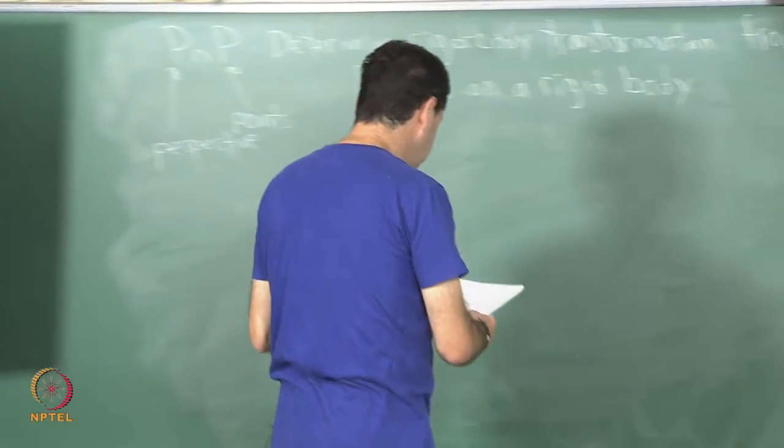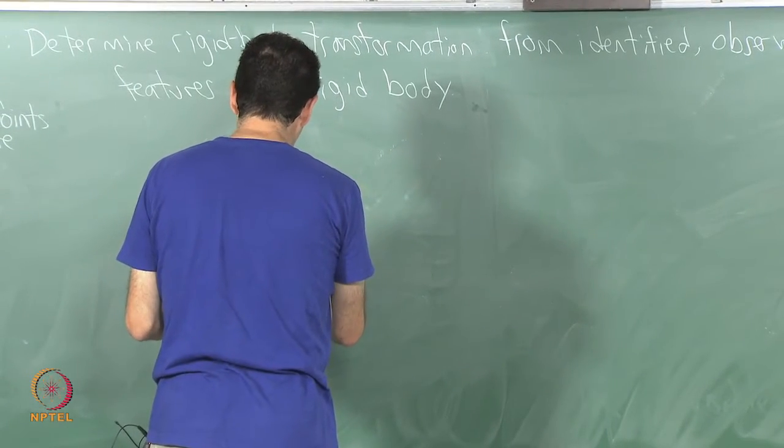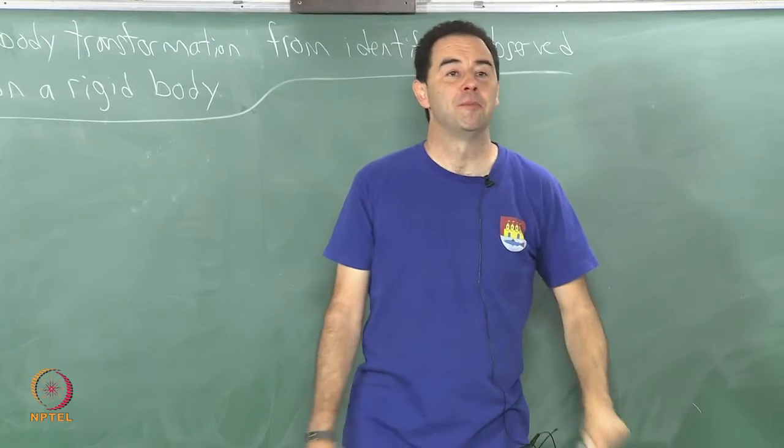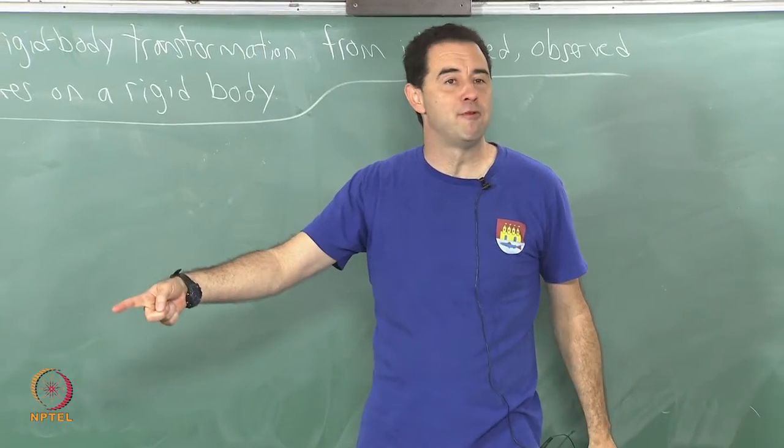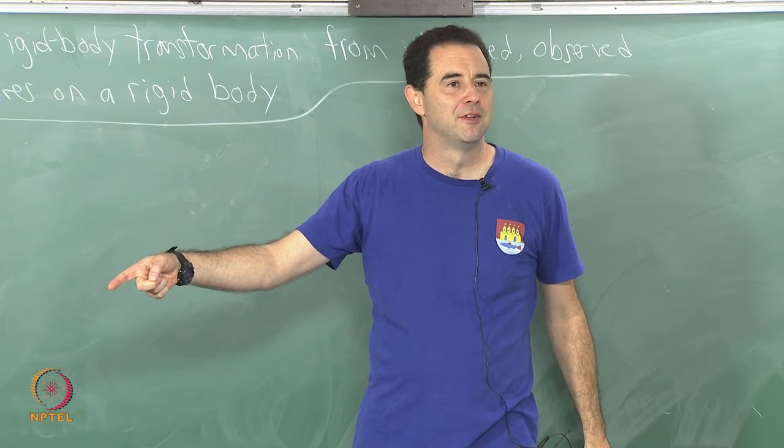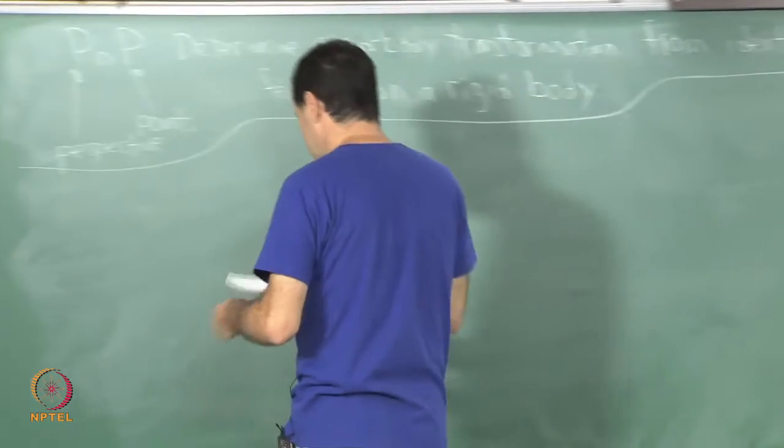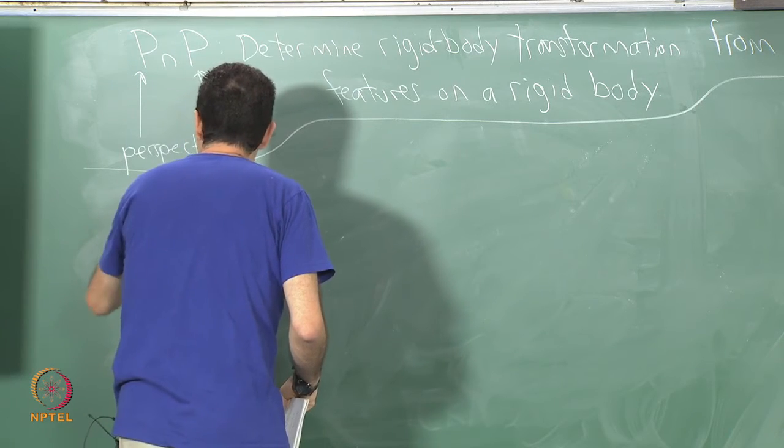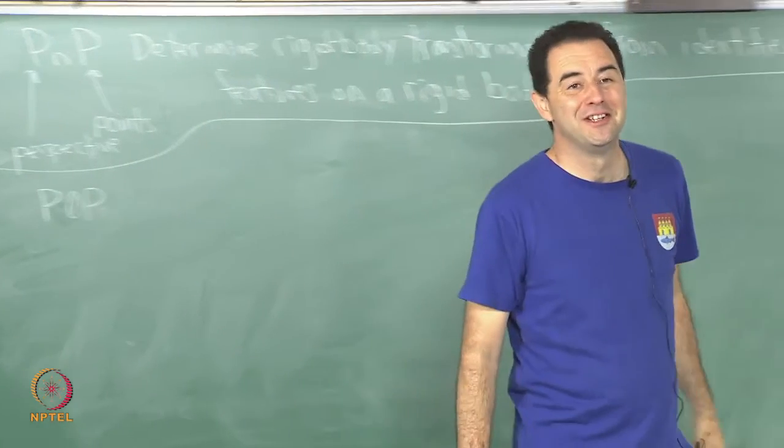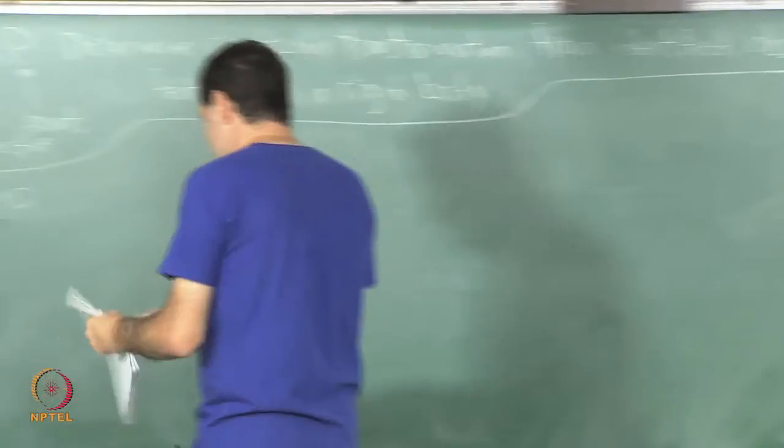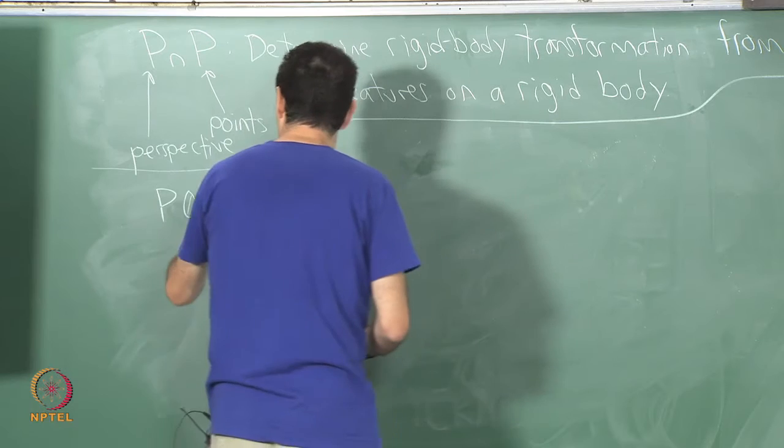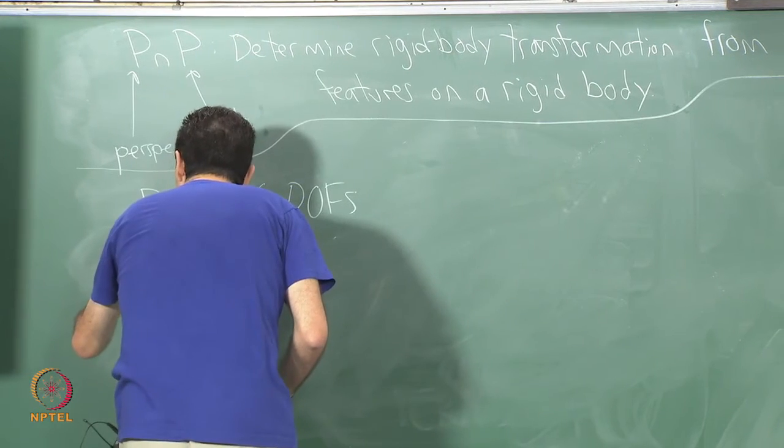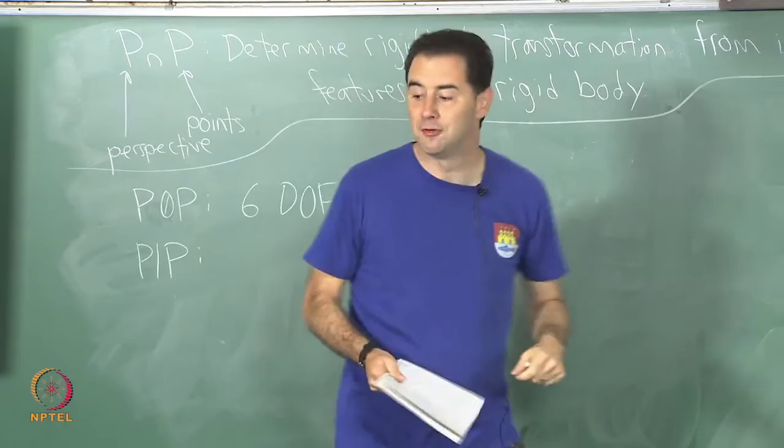Let us think about different versions of this problem. I like to talk about degrees of freedom. How many degrees of freedom do we have for the rigid body before we see any features? Six, full six. If we just have P0P - n is the number of points - if I have 0 points seen then I remain with six degrees of freedom for the object. If I observe a single point in the image, I want to reason about the degrees of freedom now.